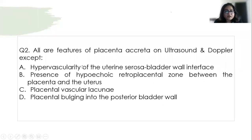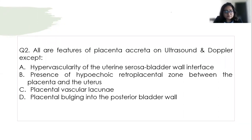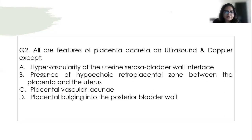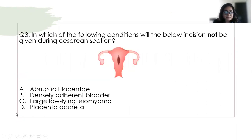MCQ 2 — All are features of placenta accreta on ultrasound and Doppler except: the correct answer is the presence of the retroplacental clear zone. Hypervascularity, vascular lacunae inside the placenta, and placenta bulging into the posterior bladder wall are all features of accreta. The absence of the retroplacental hypoechoic clear zone is a feature of accreta — its presence is normal. So the presence of this hypoechoic area is normal; its absence is pathological.